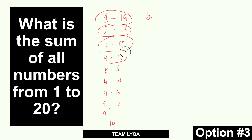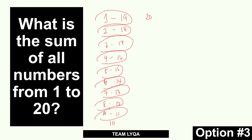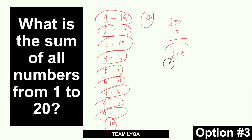So you have 9 pairs, each equal to 20 — that's 9 × 20 = 200. Then you have the leftover 10 that has no pair. So 200 + 10 = 210. Same answer! I just paired them up.